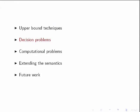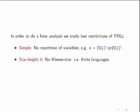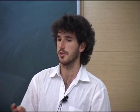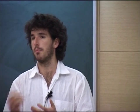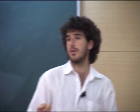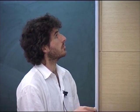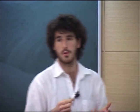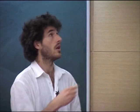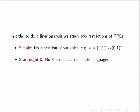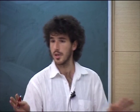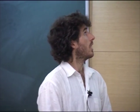Since we found high complexity in the problems, we tried to identify fragments with lower complexity. We defined two restrictions: first, forbidding repetition of variables — using each variable x only once (a syntactic condition); second, forbidding Kleene star entirely, restricting to finite languages.